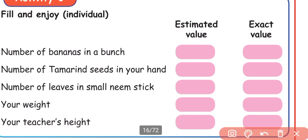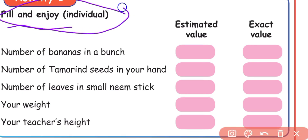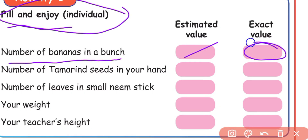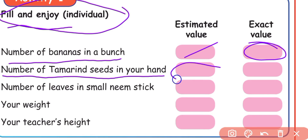See Activity 1: Fill and enjoy — Individual activity. Estimate the number of bananas in a bunch, then write the exact count. Also estimate the number of tamarind seeds in your hand, guess the number, write the estimated number, then count and write the exact value.